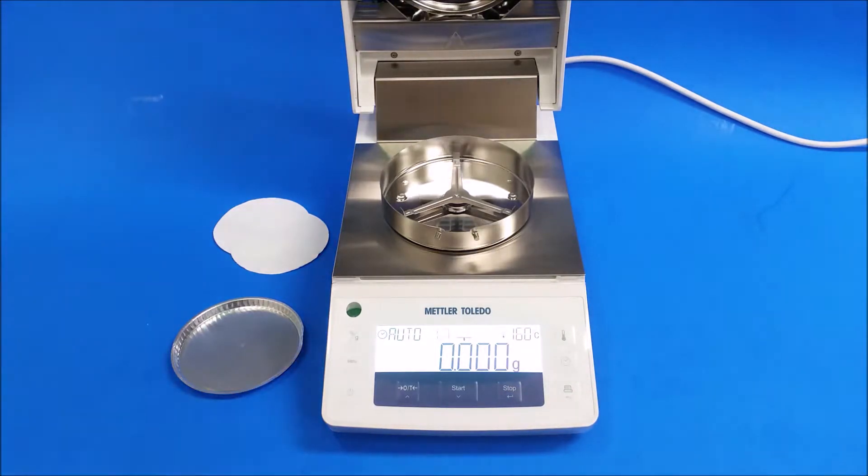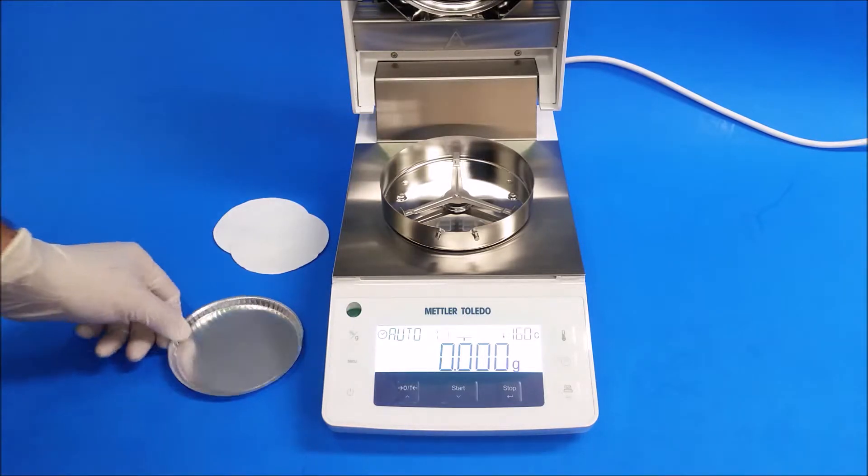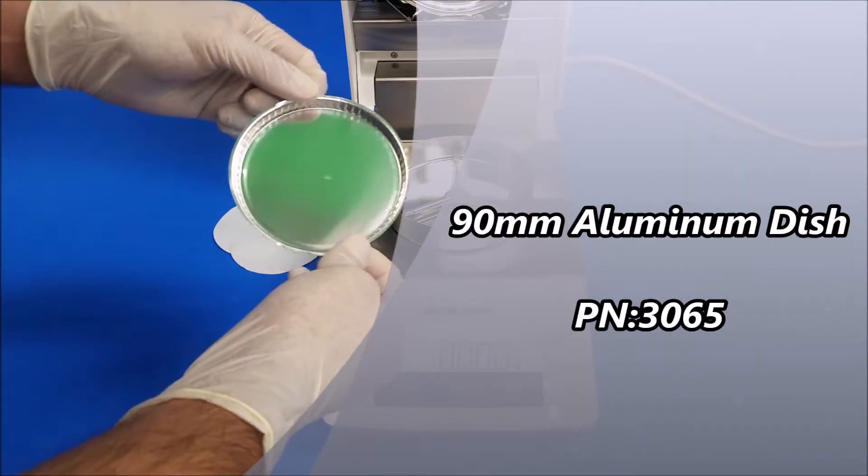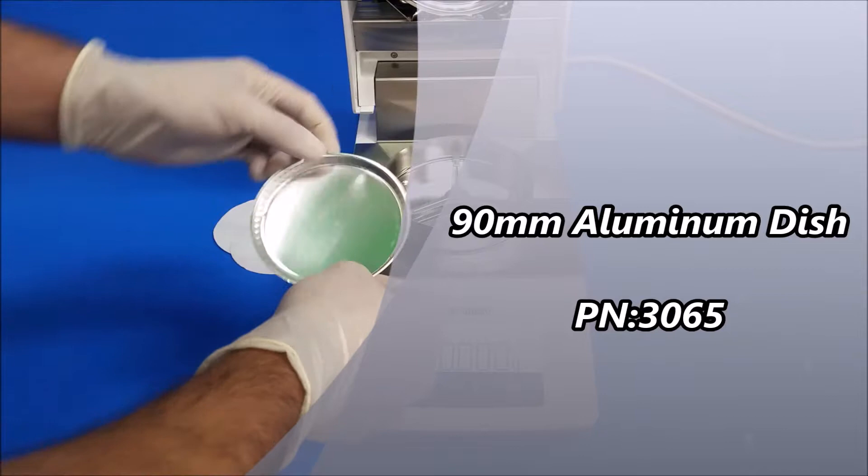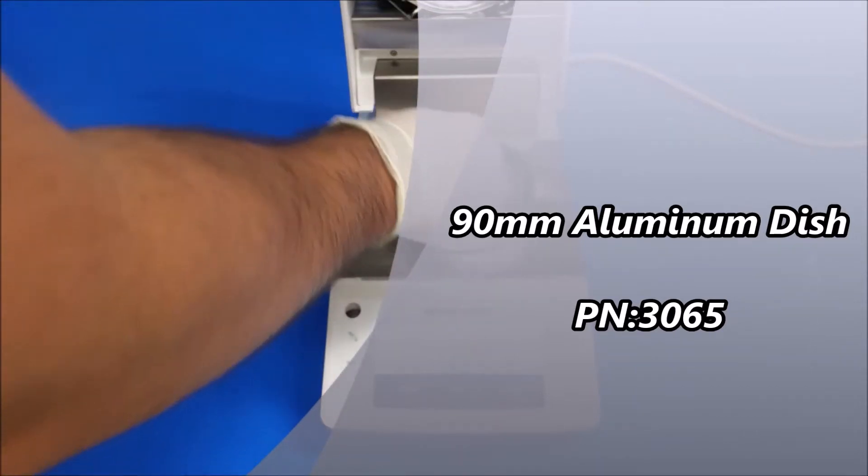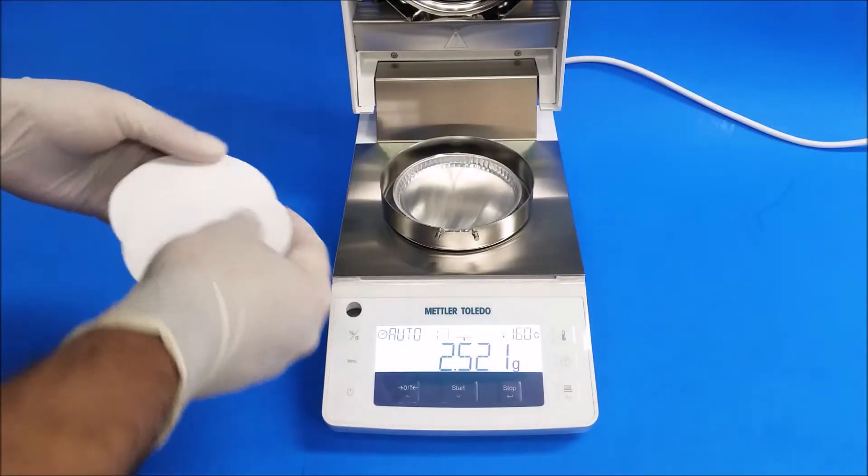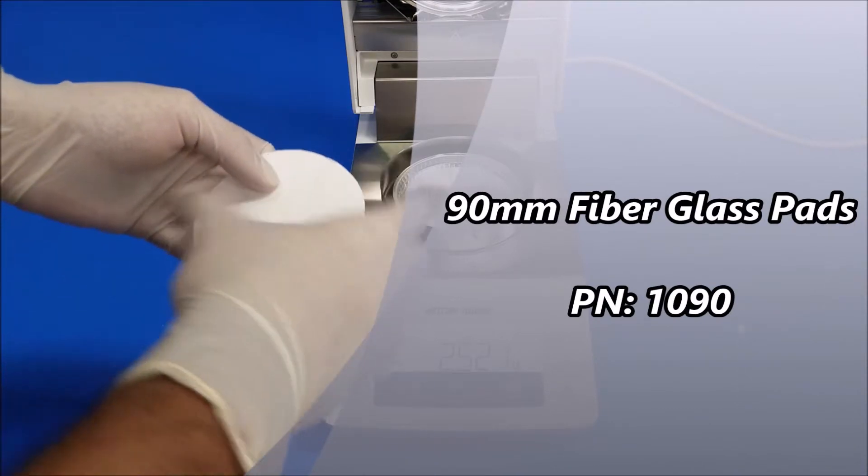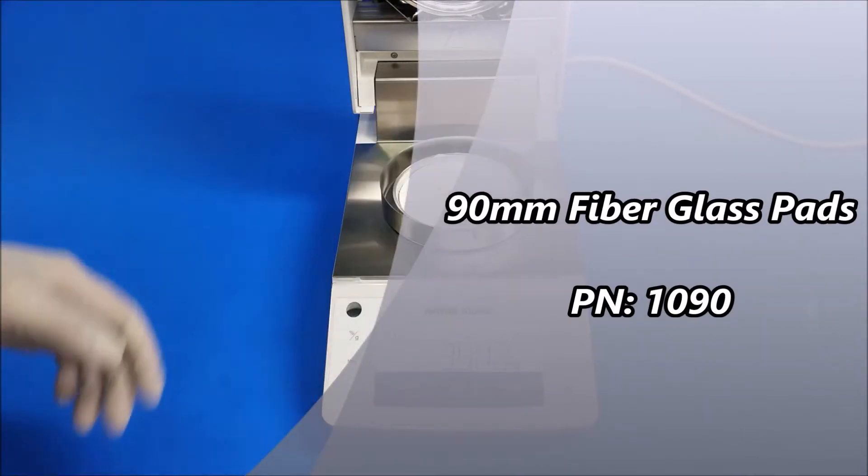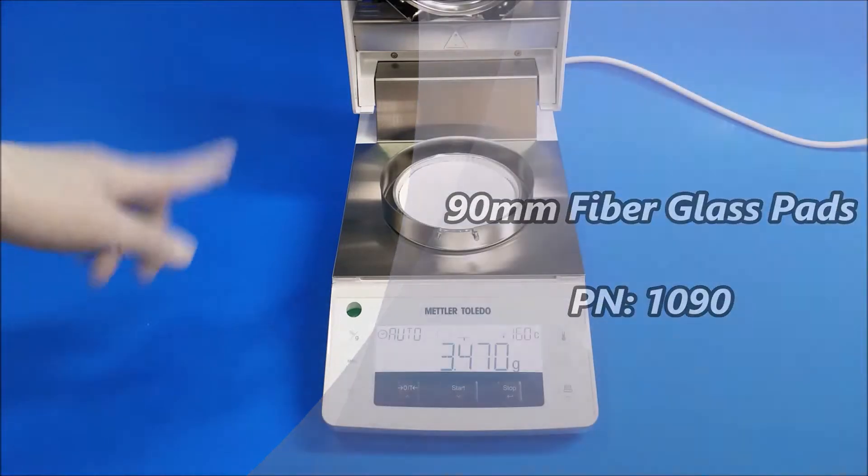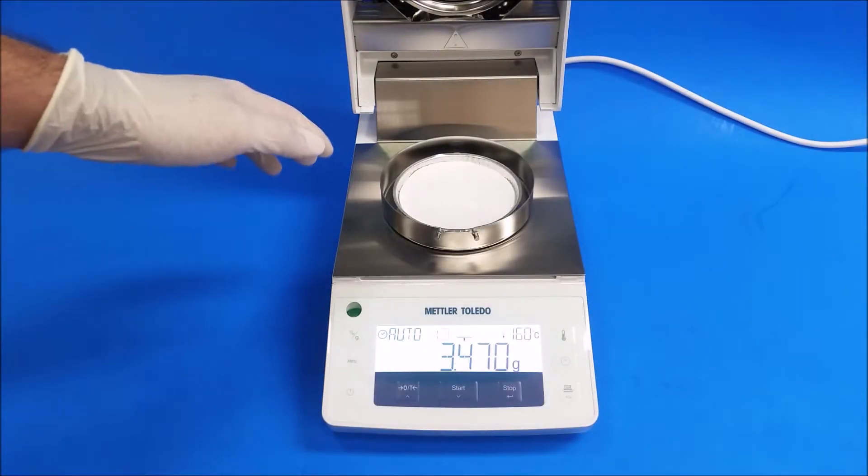I'm going to put in an aluminum dish, then my two pads. And now I'm going to press tare. We're going to make sure you press tare while the hood is down.